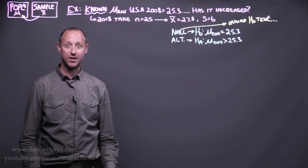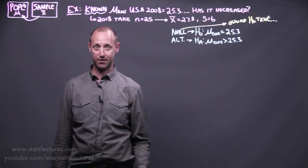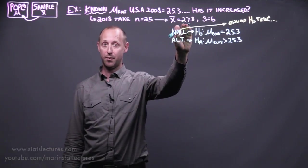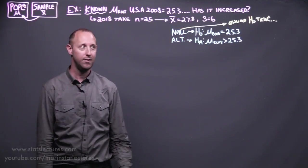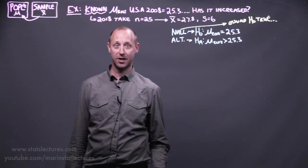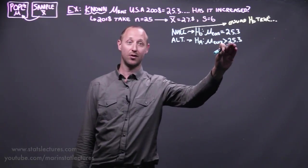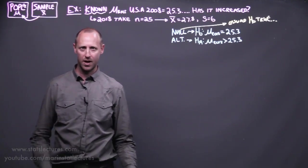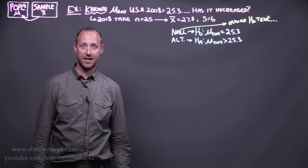If instead we try to start by saying, let's assume the alternative is true, let's assume there has been an increase, we don't know exactly what we'd expect our sample mean to be in 2018. All we know is if there has been an increase, we'd expect it to be something larger than 25.3, but we don't know exactly what. So we start by assuming our null is true, and then see if we can provide evidence against it.